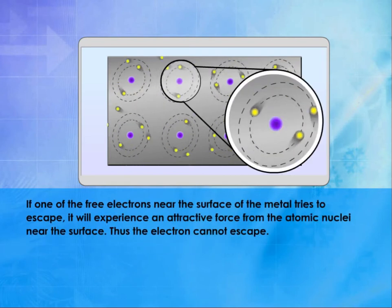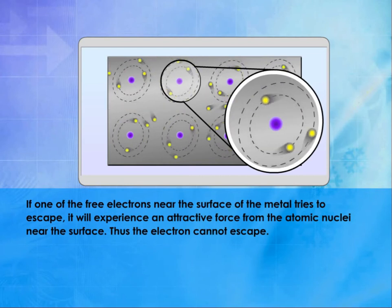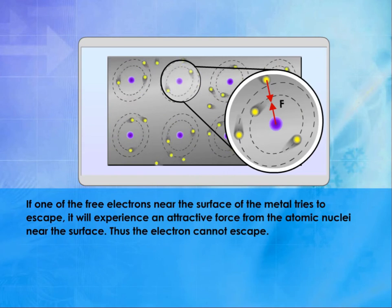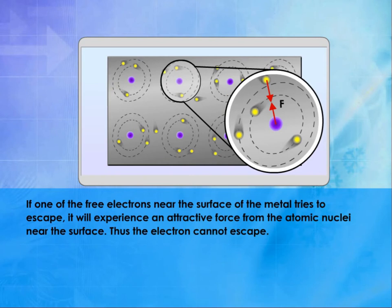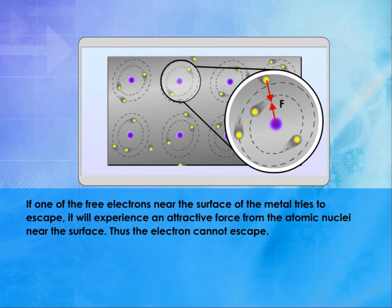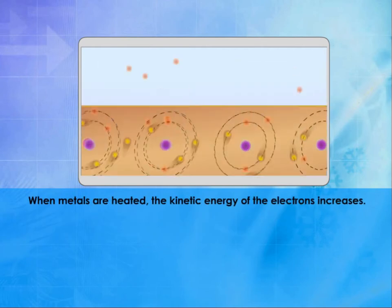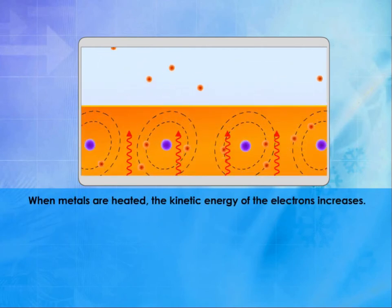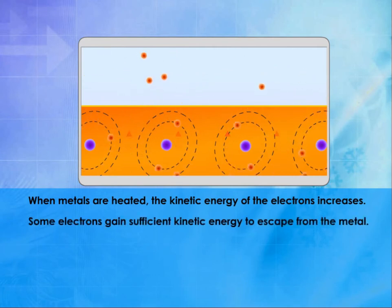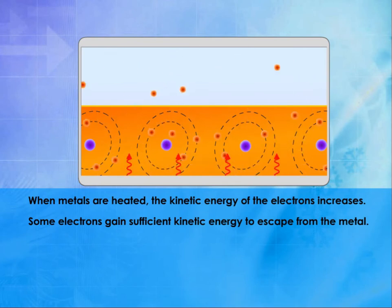If one of the free electrons near the surface of the metal tries to escape, it will experience an attractive force from the atomic nuclei near the surface. Thus, the electron cannot escape. When metals are heated, the kinetic energy of the electrons increases. Some electrons gain sufficient kinetic energy to escape from the metal.